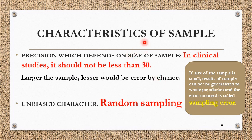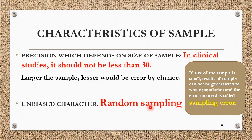Coming to the characteristics of a sample. There are two main characteristics. First, precision — precision depends upon the size of the sample. In clinical trials, it should generally not be less than 30. If the sample size is small, results cannot be generalized to the whole population, and sampling error will occur. Larger the sample, lesser the error by chance, and results will be more applicable to the whole population. Second, there should be an unbiased character — no partial behavior from the examiner in selecting the sample. That is why random sampling is considered the best sampling technique.